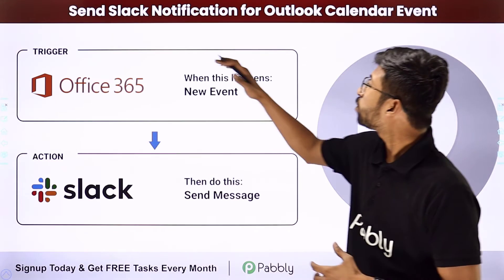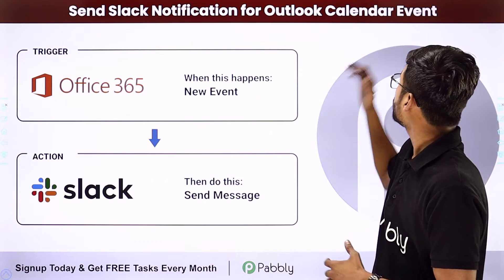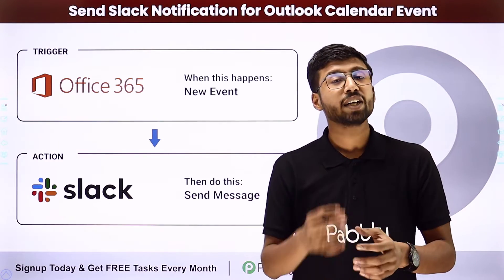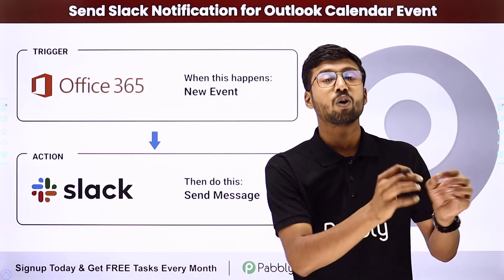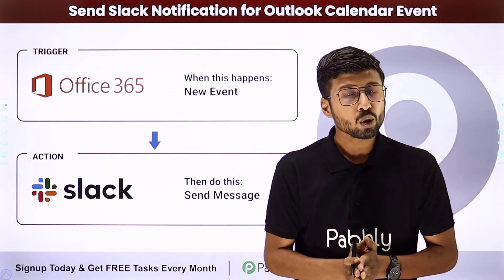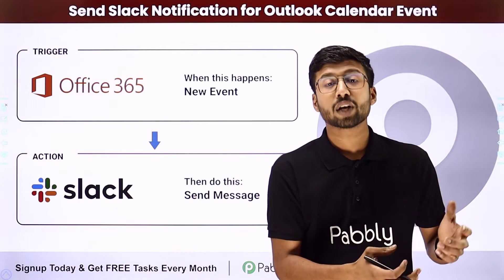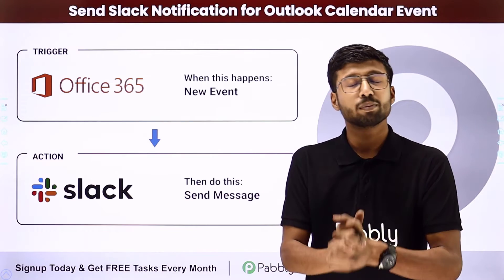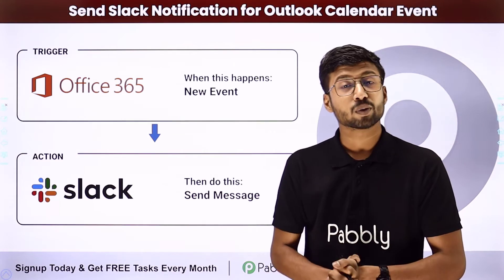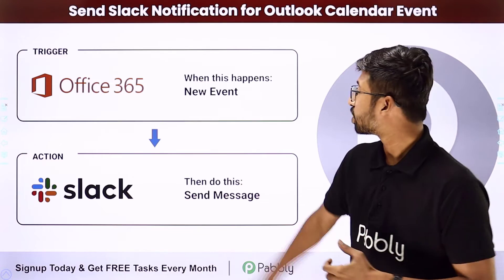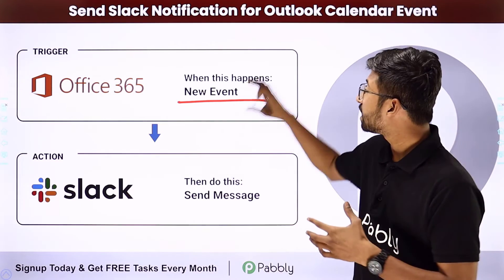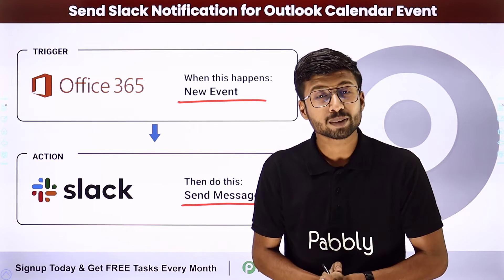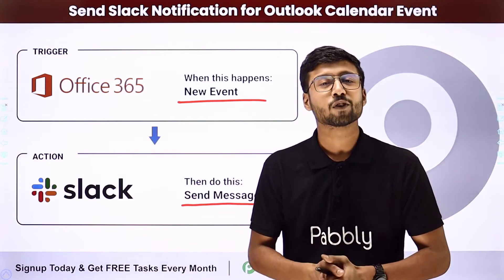In this video, we are going to learn how to send a Slack notification for an Outlook calendar event. Suppose you and your team communicate over Slack and use Microsoft Outlook calendar to maintain upcoming events. Whenever a new event is created in your Outlook calendar — Microsoft Office 365 calendar — you want to send those event details to your team members on Slack. You can actually automate this process, so that whenever a new event is created, the event details will automatically be sent as a message on your Slack channel.